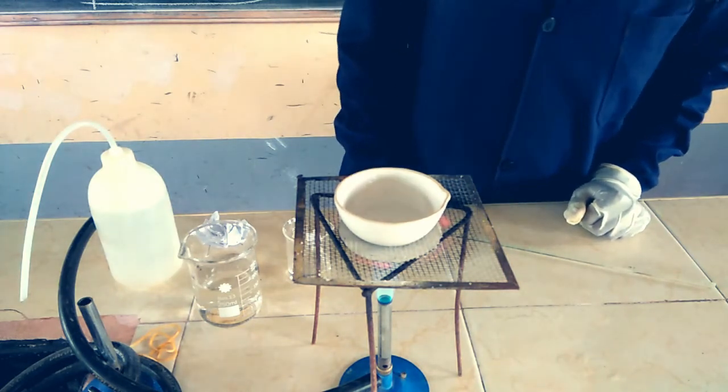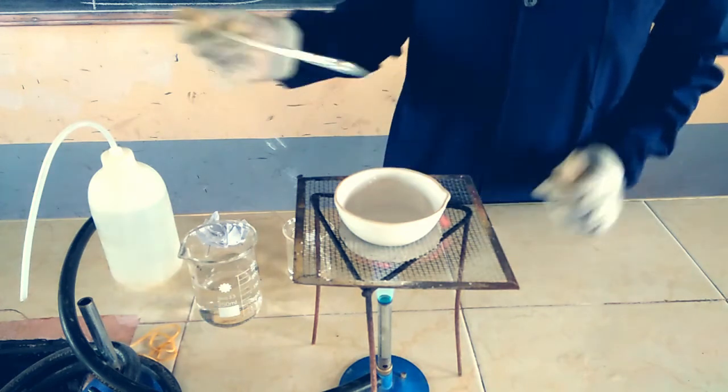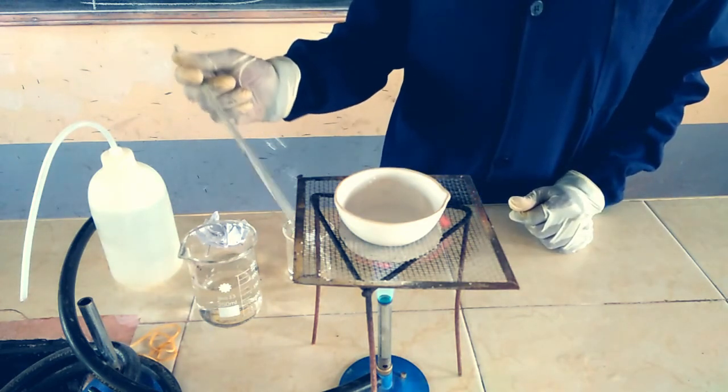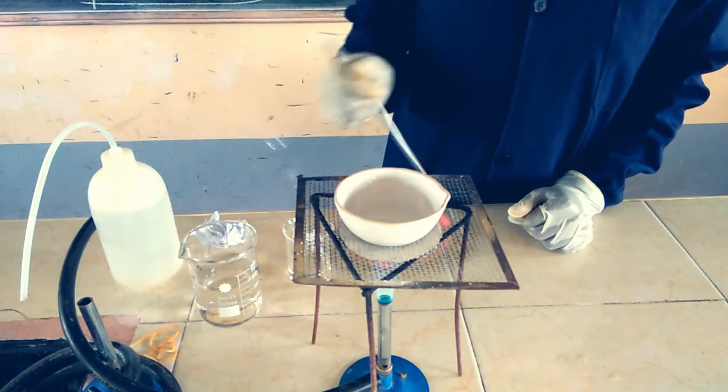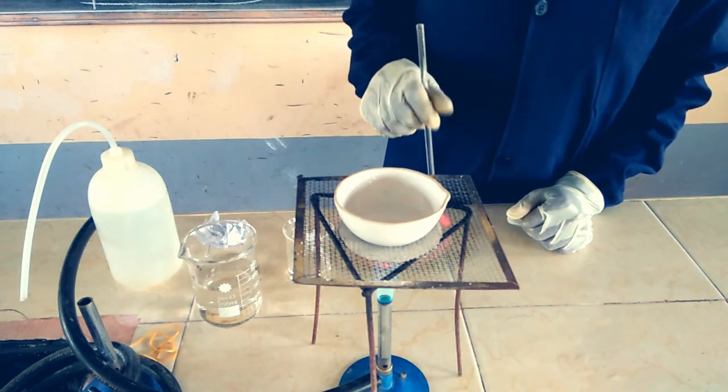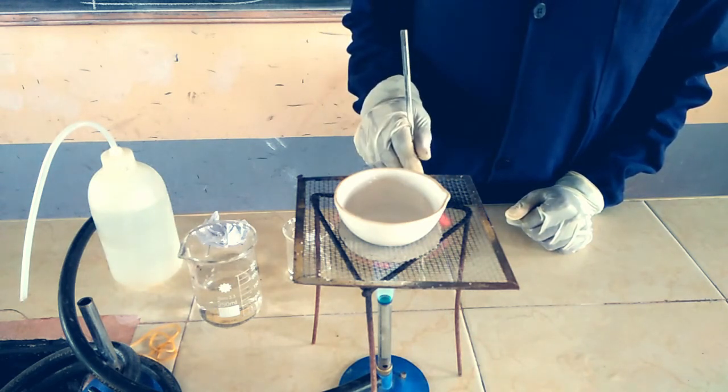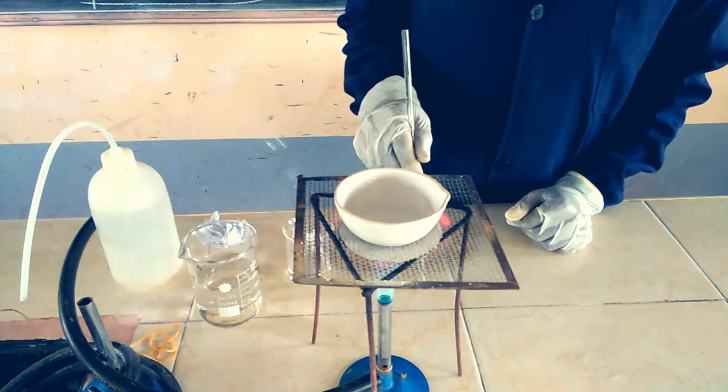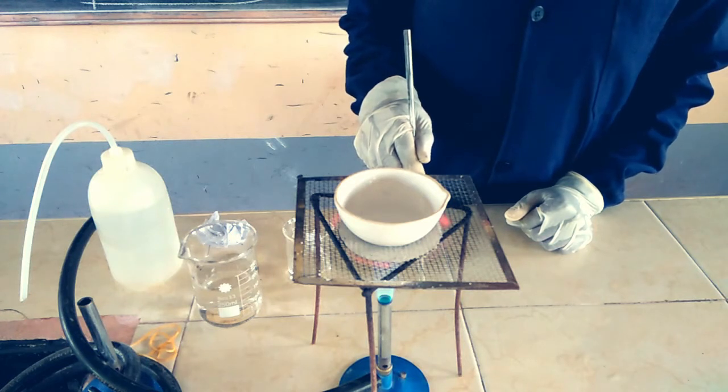We need to drive out all the water. As soon as you notice the water is driven out, the sodium chloride normally spits out of the evaporating basin. Once it starts spitting, we're supposed to transfer it onto a water bath so we can evaporate slowly to avoid the spitting.